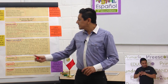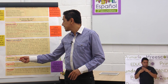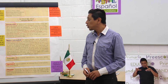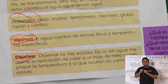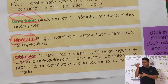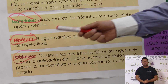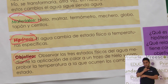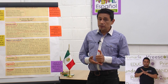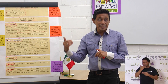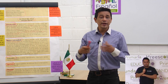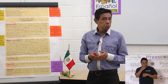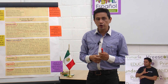El siguiente apartado tiene que ver con los materiales: hielo, matraz, termómetro, mechero, globo, tapón y cerillos. Estos son los materiales que se utilizaron para el proceso del experimento científico. Abajo dice hipótesis: El agua cambia de estado físico a temperaturas específicas. Una hipótesis puede ser probable o no probable. Al final del experimento, uno llega a la conclusión de que la hipótesis fue comprobable o no fue comprobable.